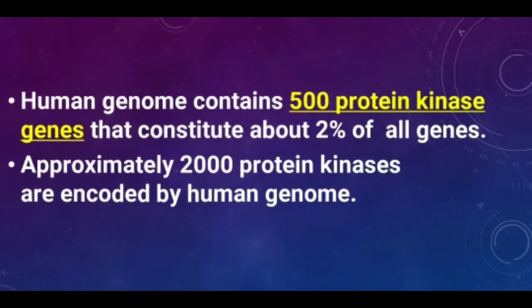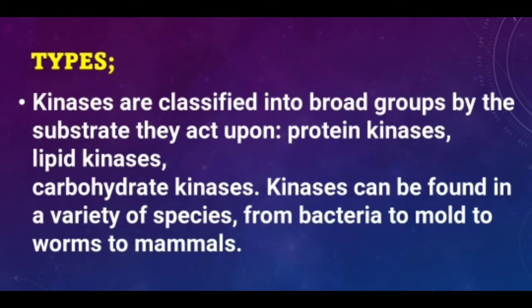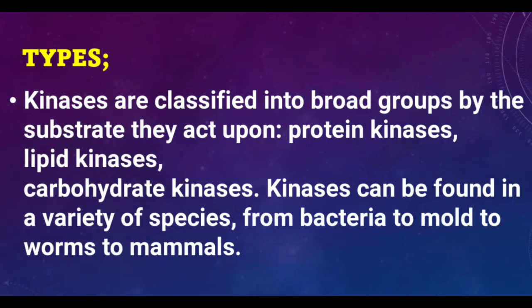a phosphate group. The human genome contains 500 protein kinase genes, which constitute about 2% of all genes. Approximately 2,000 protein kinases are encoded by the human genome. Kinases are classified into broad groups by the substrate they act upon: protein kinases, lipid kinases, and carbohydrate kinases. Kinases can be found in a variety of species, from bacteria to mold to worms to mammals.